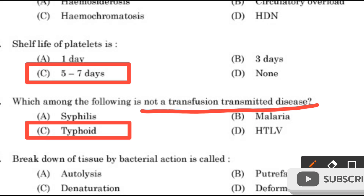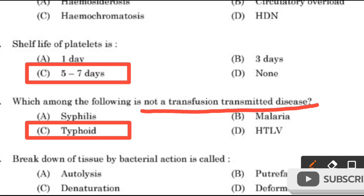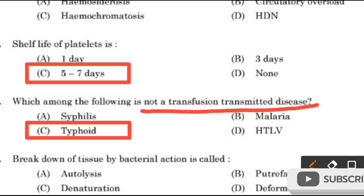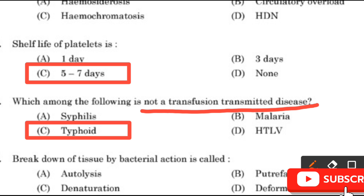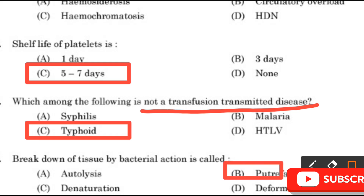Question number 16: Breakdown of tissue by bacterial action is called — Autolysis, Putrefaction, Denaturation, or Deformation? The right answer is option B: Putrefaction.